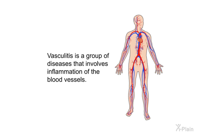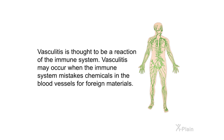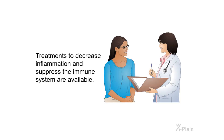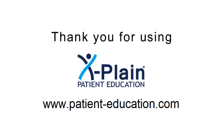Vasculitis is a group of diseases that involves inflammation of the blood vessels. Inflammation can cause vessels to narrow, blocking blood flow, and cause vessel walls to become painful, red, and tender. Vasculitis is thought to be a reaction of the immune system — it may occur when the immune system mistakes chemicals in the blood vessels for foreign materials. Treatments to decrease inflammation and suppress the immune system are available. Most people with vasculitis are able to live satisfying lives. Thank you for using Explain.